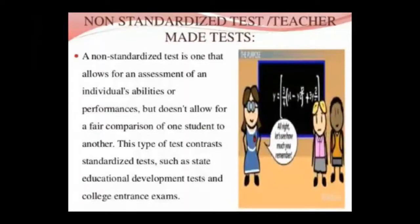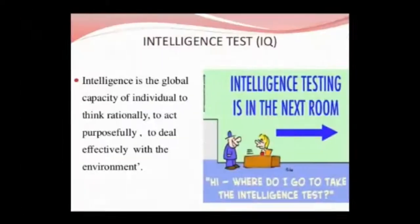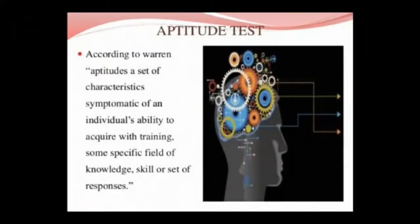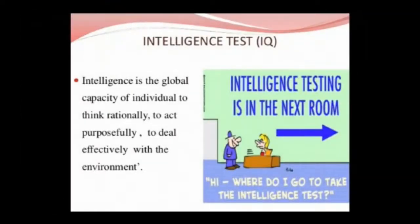Non-standardized test. According to Warren, aptitude is a set of characteristics symptomatic of an individual's ability to acquire, with training, some specific skill or knowledge or set of responses. Intelligence is the global capacity of an individual to think rationally, to act purposefully, and to deal effectively with the environment.